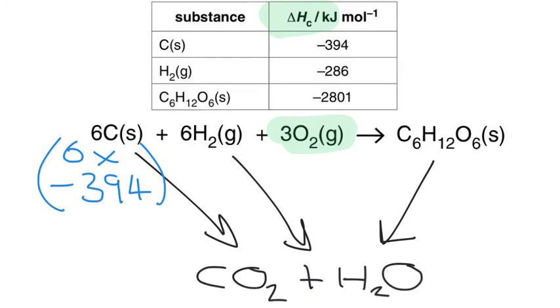What we've also got then is our hydrogen. For our hydrogen one, we've got six times exactly the same thing, six times its value because the value in the table is for one mole and I've got six moles of it being combusted to that bottom line. So I just do six times the minus 286. Nice and easy.